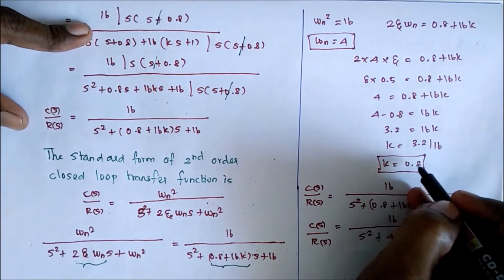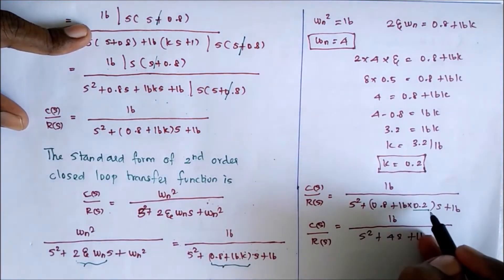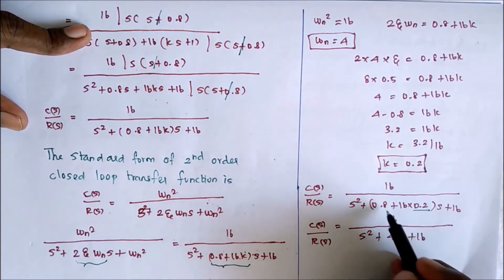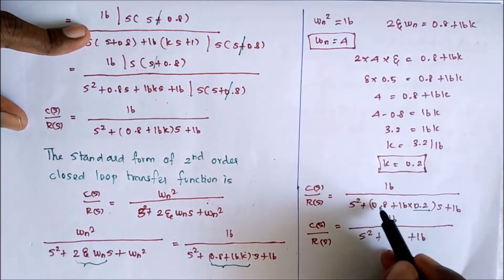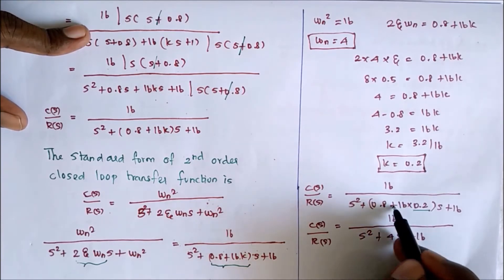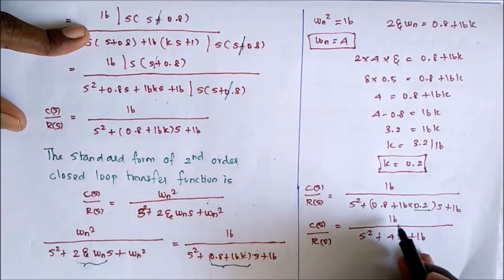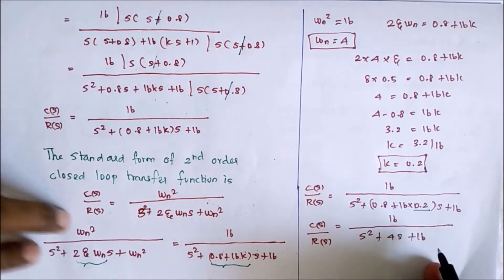Now we substitute K equals 0.2 into the equation. After substituting, 0.2 into 16 equals 3.2, and 3.2 plus 0.8 equals 4. So S squared plus 4S plus 16. The final closed loop transfer function is C(S) divided by R(S) equal to 16 divided by S squared plus 4S plus 16.